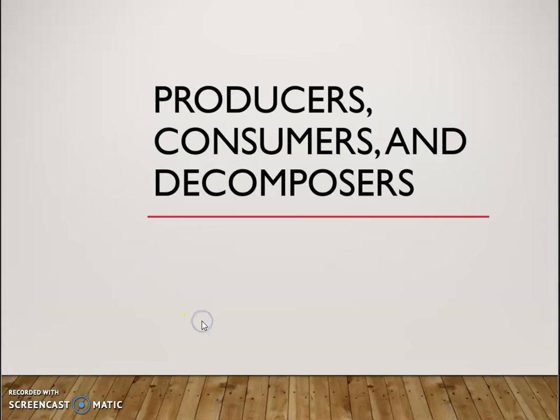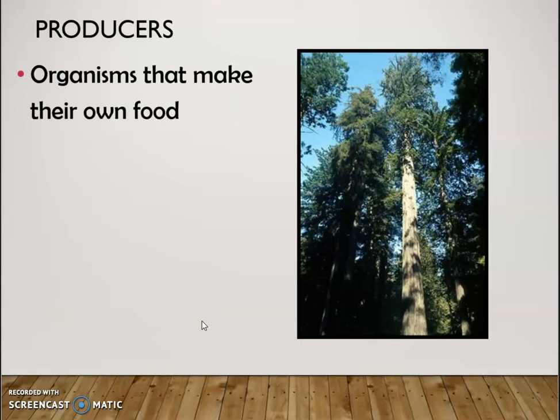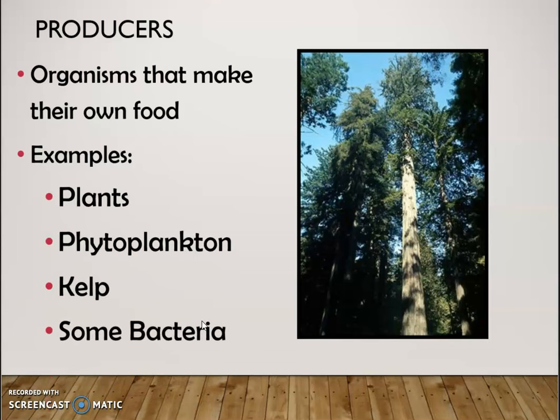Our first one is going to be a producer. And as the name implies, they are going to produce their own food. In nature, that doesn't mean that they can cook, but rather they're going to do photosynthesis and convert solar energy into stored chemical energy that we call food. Organisms that are producers include plants, phytoplankton, kelp, and some bacteria — often cyanobacteria.